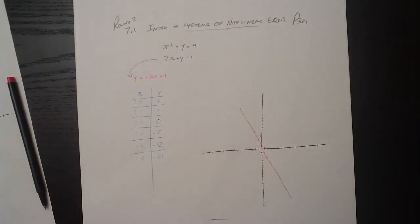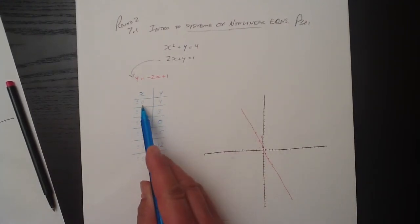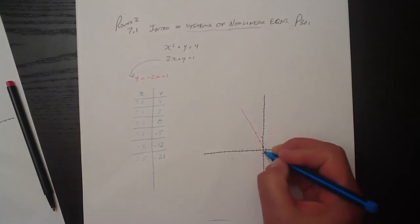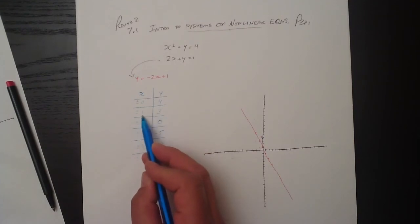So now I have a series of coordinates here. This one is 0, 4. So 0, 1, 2, 3, 4. This one is plus 1 and 3 and minus 1 and 3.